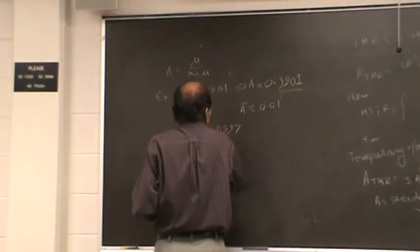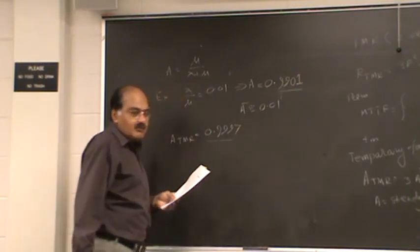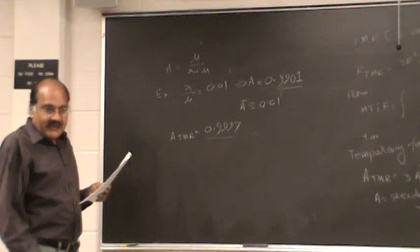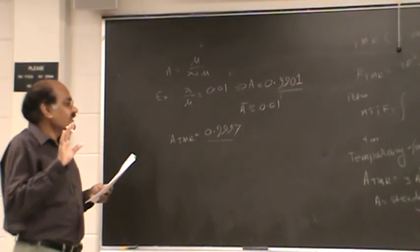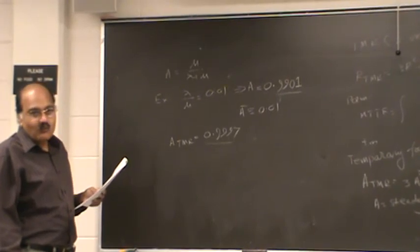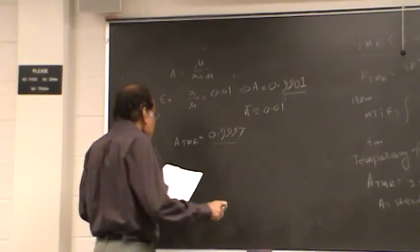Compared with this, you will notice that TMR has much better availability, unless you insist on approximating 0.99 by 1.